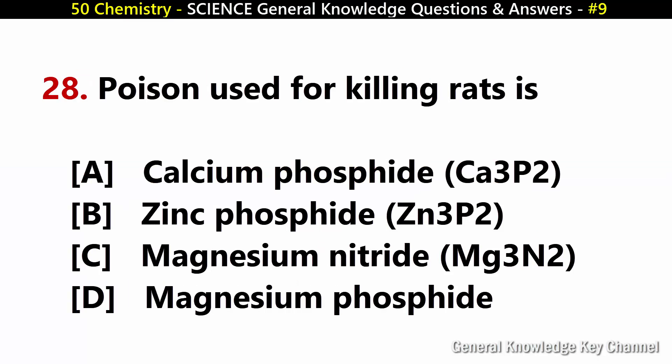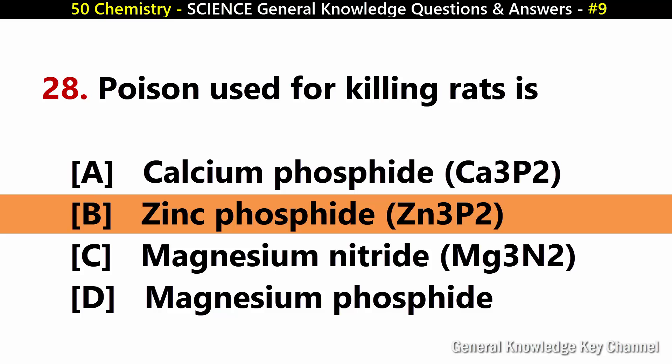Poison used for killing rats is? Answer B: Zinc phosphate.